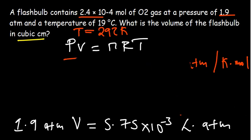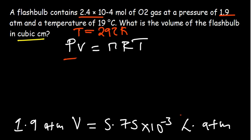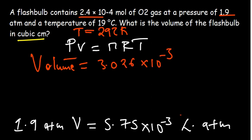Our volume is going to be equal to - divided by 1.9 - I'm getting 3.026 by 10 to the power minus 3 in liters. The liter-atm will cancel after we divide both sides, so just remain with liters.